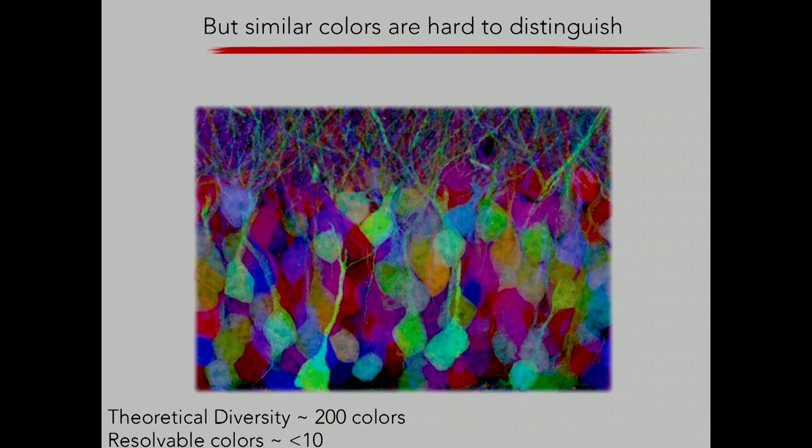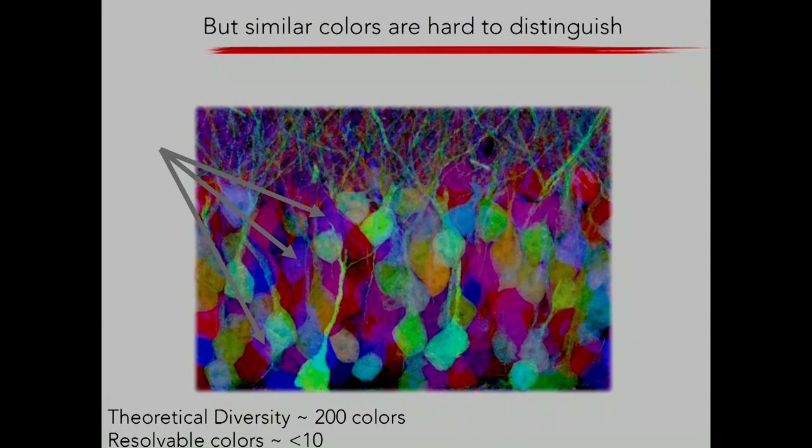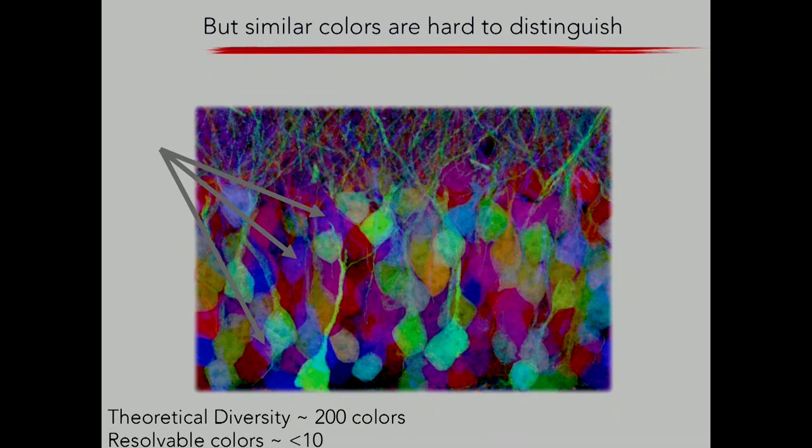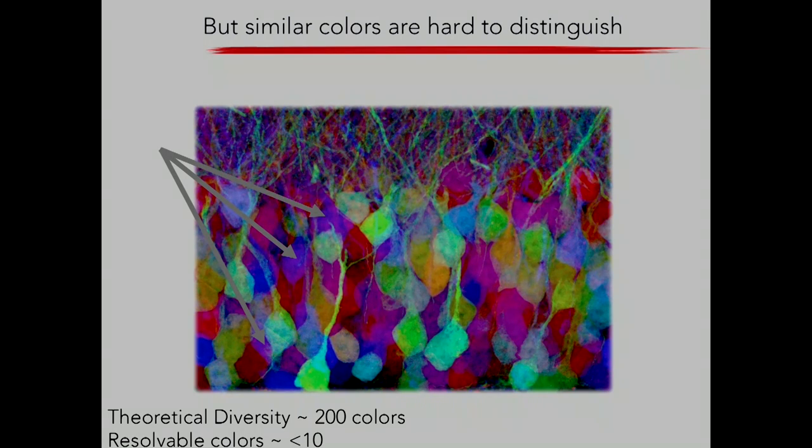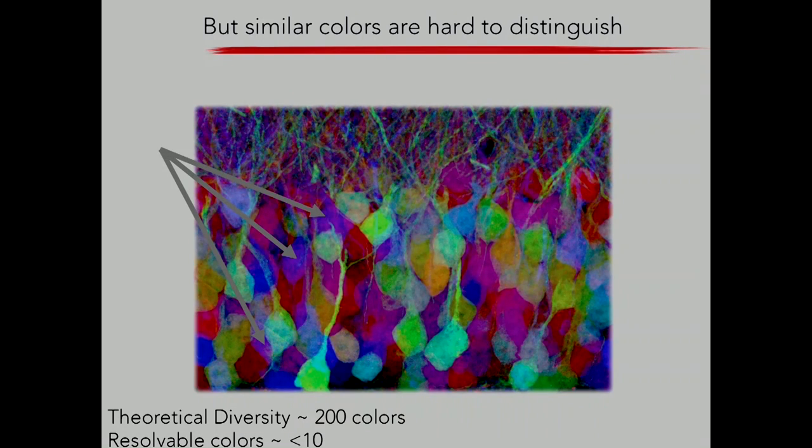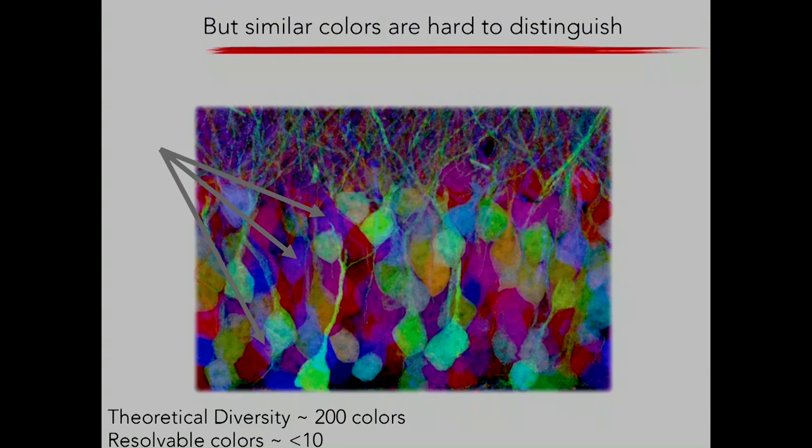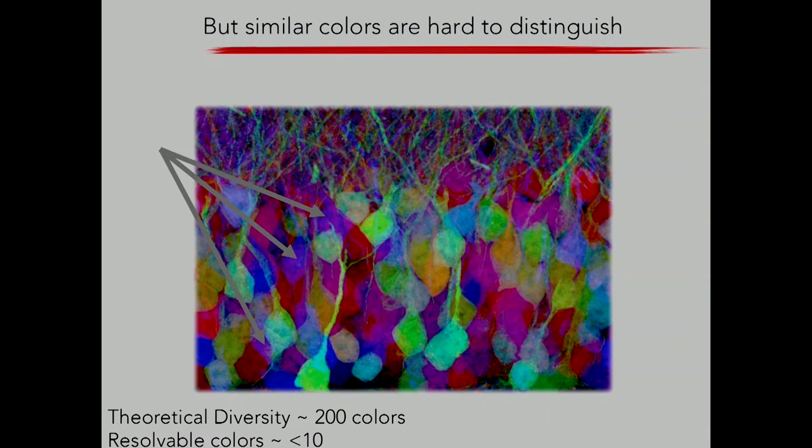But the problem is that similar colors are hard to distinguish. So although the theoretical diversity based on this genetic trick is over 200, in practice, using real microscopes, you can't resolve more than just a few. 10 is the absolute limit, but maybe 3 or 4 typically. And that's shown here. Based on this randomness, I can be pretty confident that this neuron and this neuron and this neuron are all different colors. But they appear to be the same. So it's a sort of Zen issue: if neurons are different colors, but you can't see them, can you trace? I'll work on that one. But that was the inspiration for our idea. The idea is that if only you could resolve those colors, if only there were more than 5 or 10 colors that you could resolve, then we'd be set.